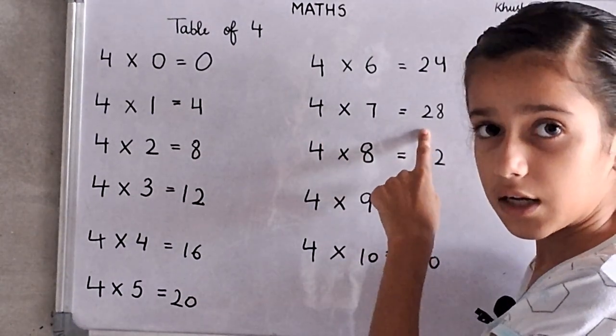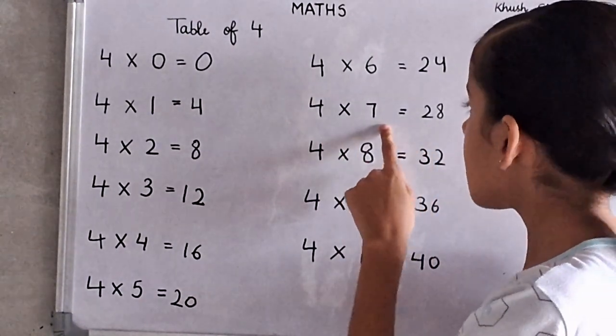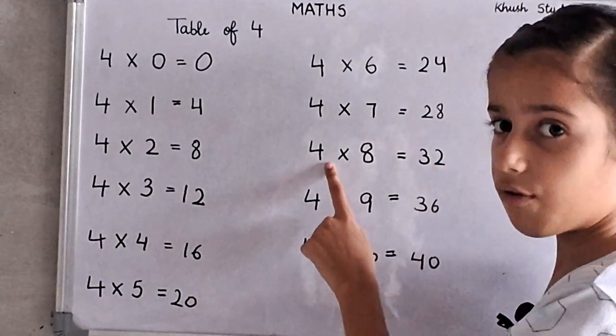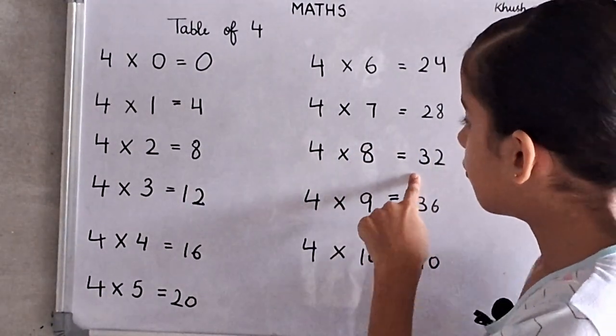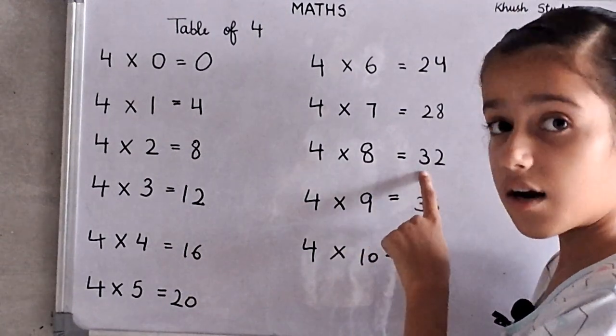4 times 7's, 28. For 7's, 28. For 8's, 32. For 8's, 32.